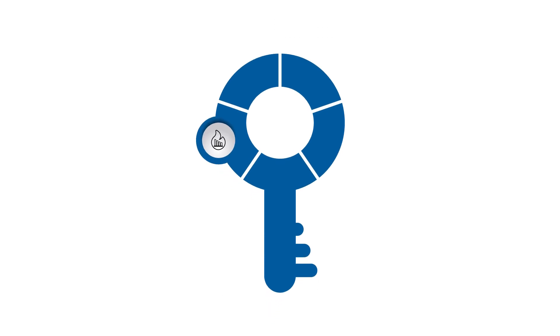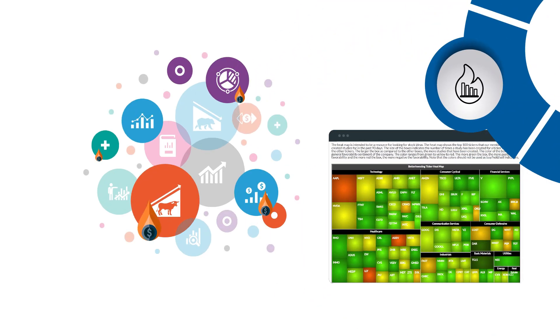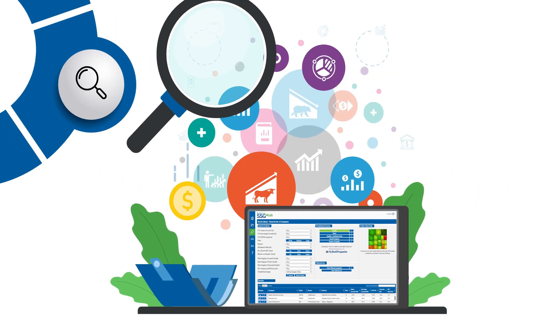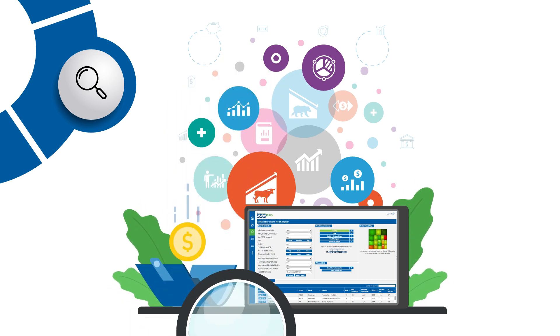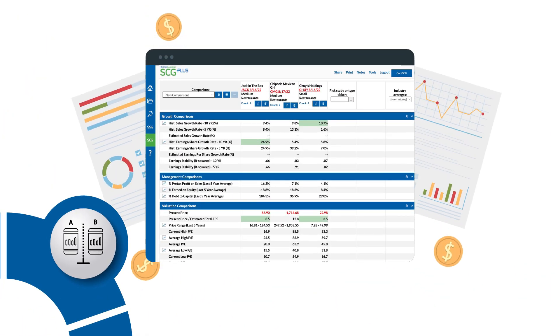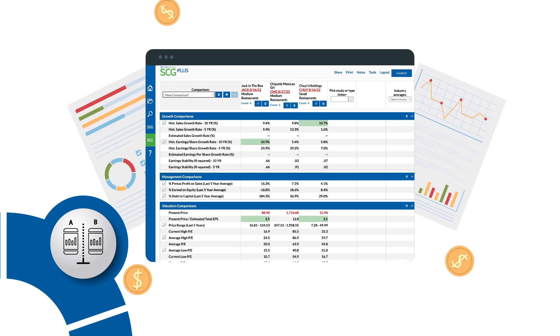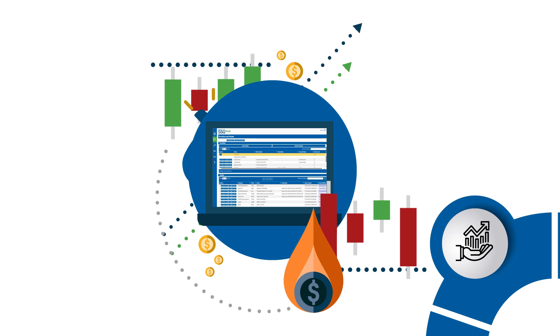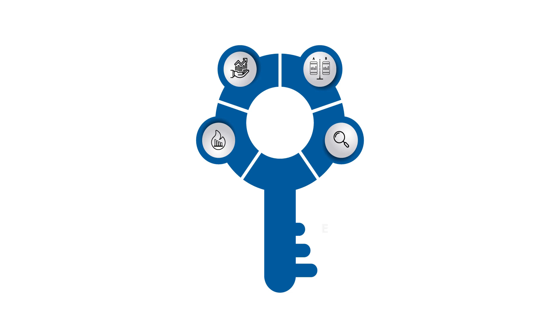Let's look at the other key features like Ticker Heatmap, Screening, Stock Comparison Guide and Portfolio Management. The Ticker Heatmap helps you quickly identify hot stocks in the Better Investing community. The screening tool allows you to filter through thousands of stocks to find the ones that meet your specific investment criteria. The Stock Comparison Guide allows you to compare the key financial metrics of multiple companies side-by-side, making it easy to see which ones are the best investments. And with Portfolio Management, you can easily track and manage all your investments in one place. All these features make quality growth stocks easy to find, analyze and compare any time of day.